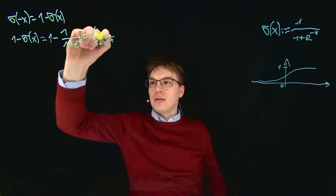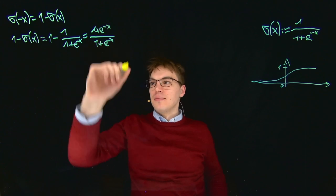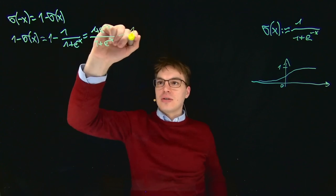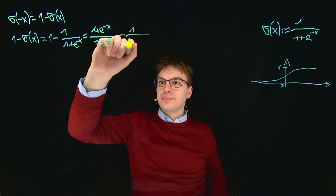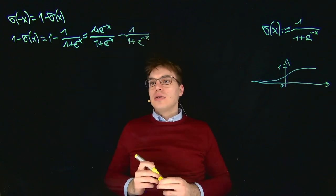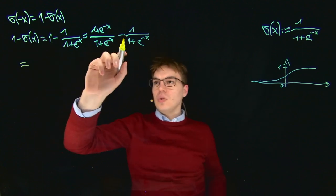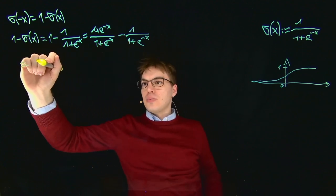So this one becomes something divided by 1 plus e to the power of minus X, and then up here we also have to get the same. This is our one and this just stays the same.